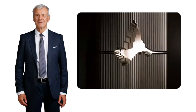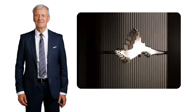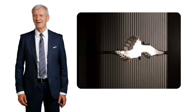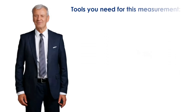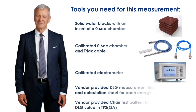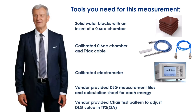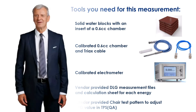Getting the optimum value of DLG assures that the modulated plans match the machine's ability to deliver the fluence. An IMRT treatment plan will not be acceptable if the DLG value is not appropriate for the machine. In this educational video we will demonstrate the sweeping gap method to measure DLG using an ion chamber. If you have Varian Eclipse, you have probably heard of DLG measurement; other TPS's require different parameters for MLC modeling.